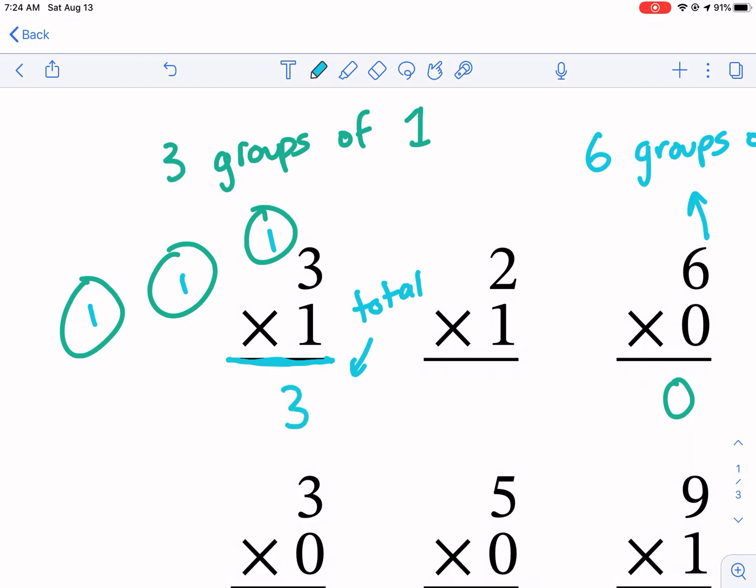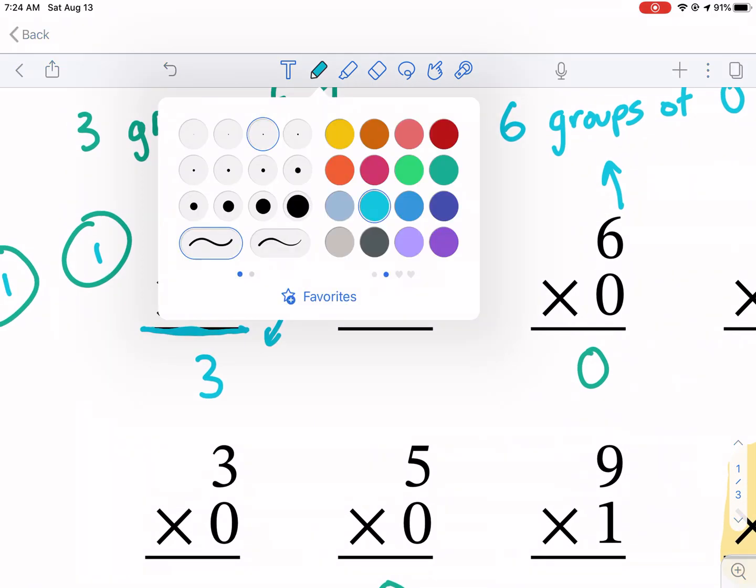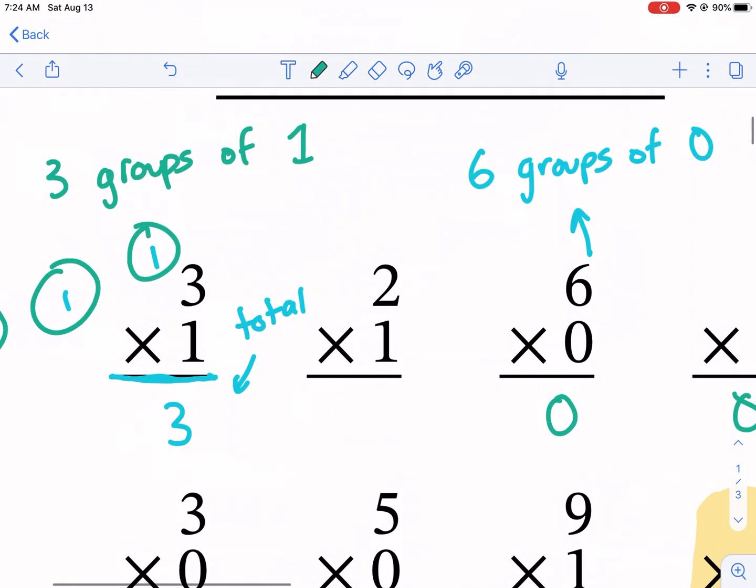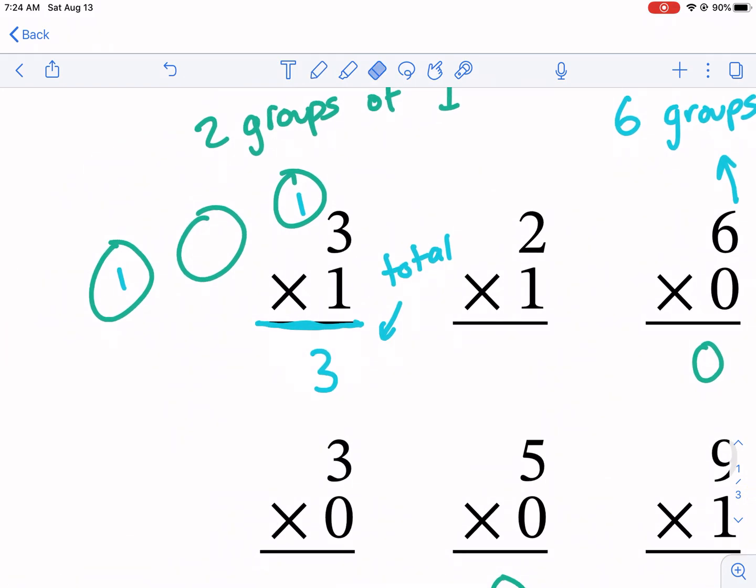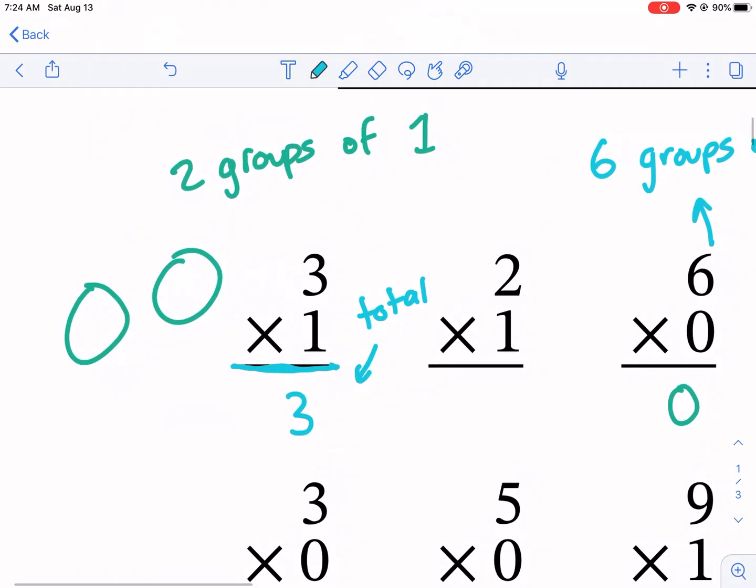What do you notice? Well three times one is three. Let's see if we have a pattern here. For the second problem, instead of three groups of one, we're gonna have only two groups of one. We get rid of one of the groups. So we have two groups and there's one in each group. What's the total? Let me get my red dot. One, two. This time we only had two.